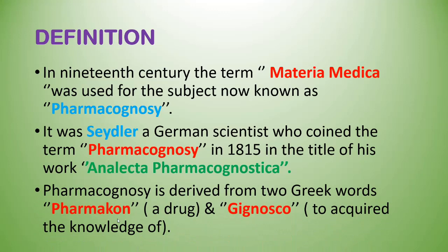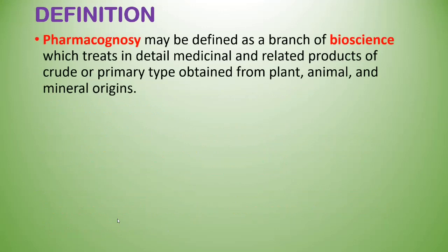Pharmacognosy is derived from two Greek words: Pharmakon, meaning drug, and Gignosco, meaning to acquire knowledge of. So pharmacognosy is essentially the knowledge acquirement of drugs. It may be defined as the branch of bioscience which treats in detail the medicinal and related products of crude and primary type obtained from plant, animal, and mineral origin.